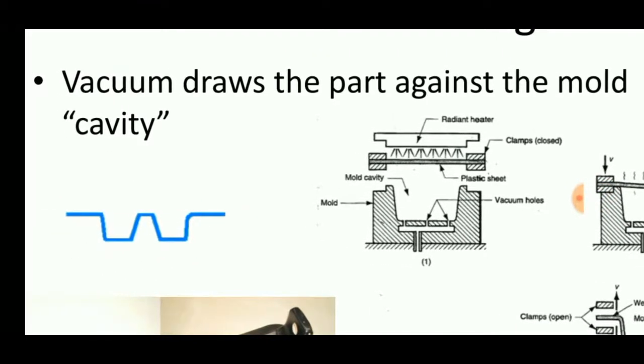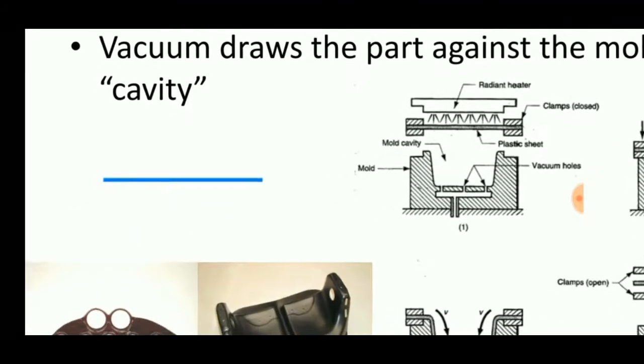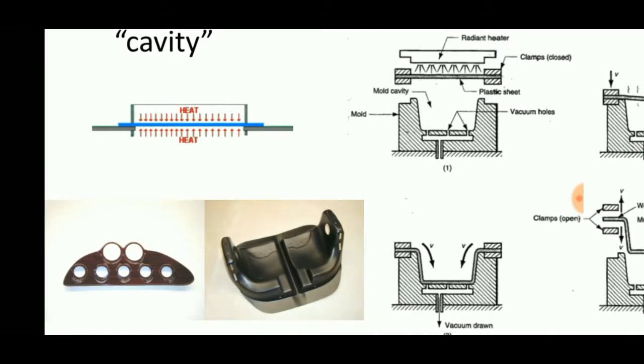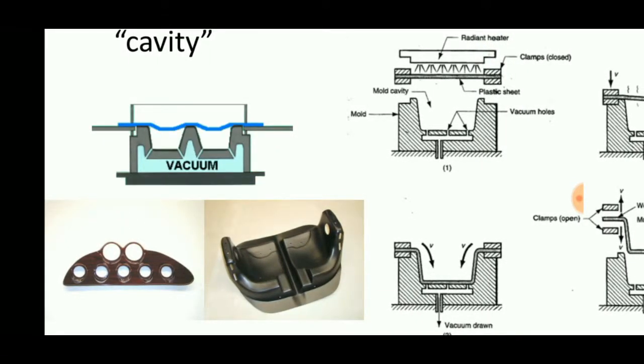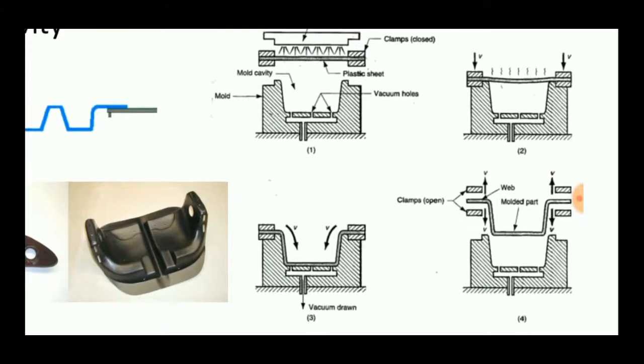Due to the heat radiation, the plastic sheet tends to deform or soften in nature so that the vacuum can pull the plastic sheet and takes up the shape of the mold cavity, as we see in this diagram.